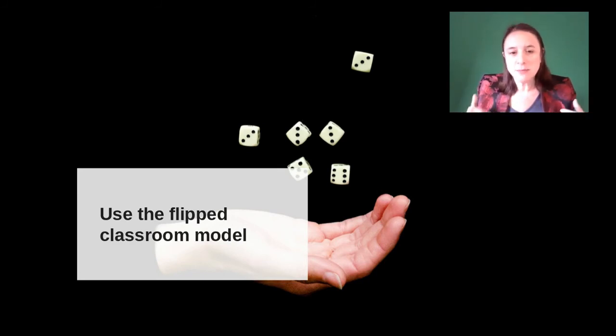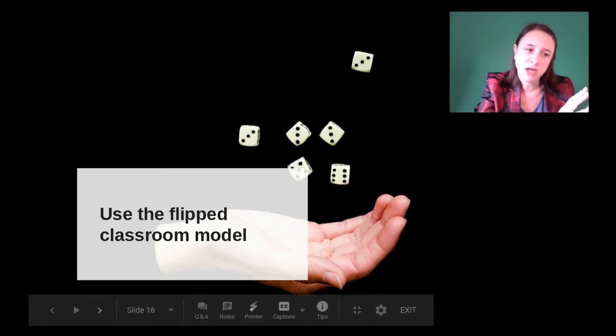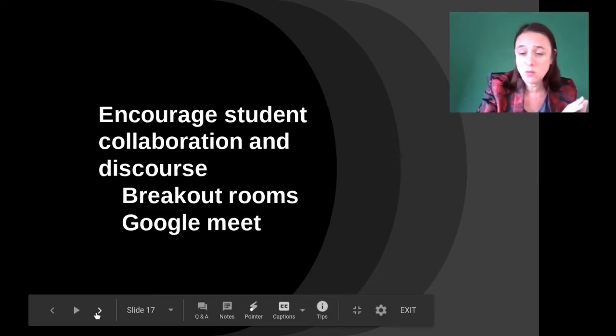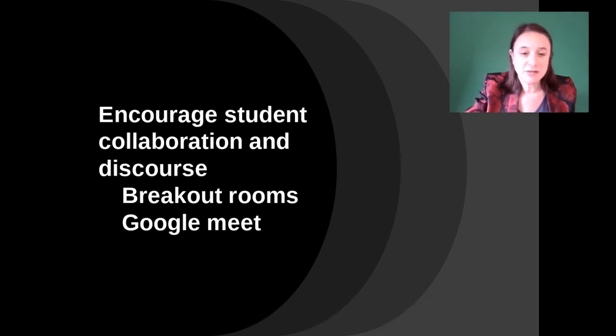We could think about using a flipped classroom model. In a sense, this class is flipped. Instead of sitting there lecturing to our kids, we've prerecorded that. When the children come on, they're actually completely involved in the activities and interactions you've set up for them. That actual instruction and lecturing takes place at a different time where they can access it whenever they want. When they come on to remote learning, that's when the activities begin.